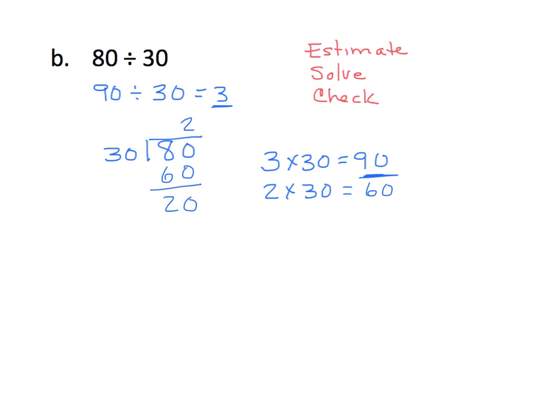Now, it's really important that you look at the number you get after you subtract that difference. That difference must be less than the divisor. Indeed, 20 is less than 30. I call that the mini-check. Always a good idea.